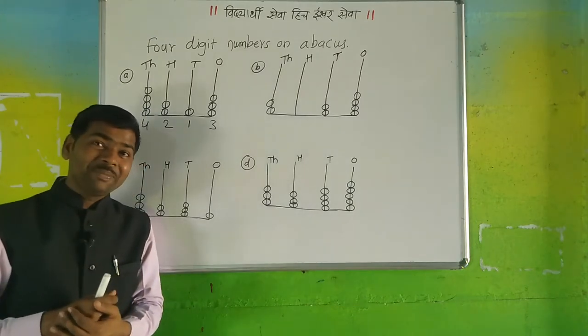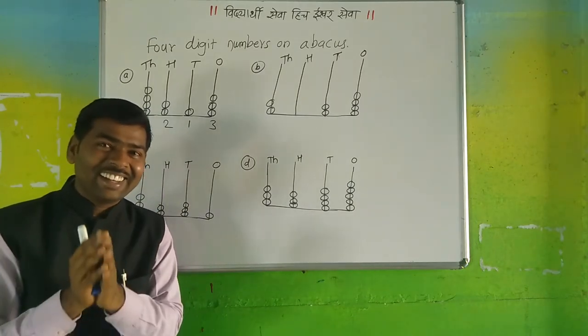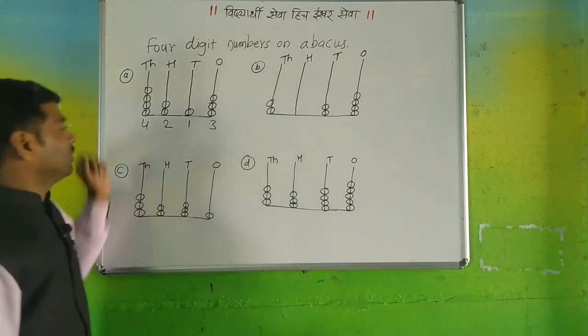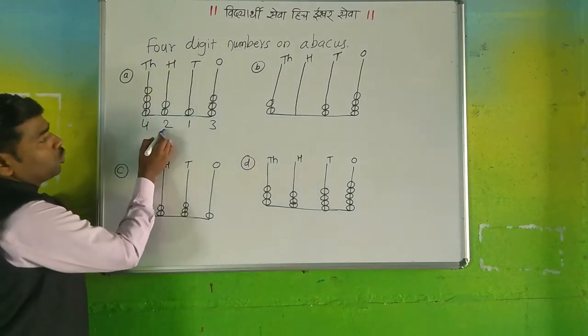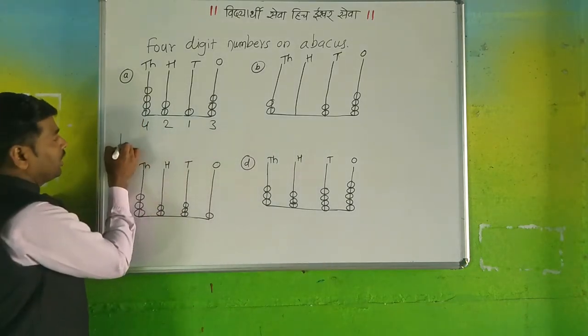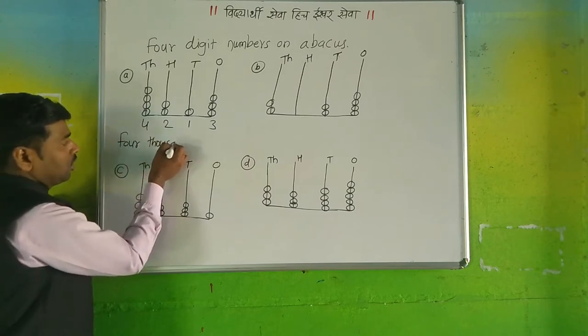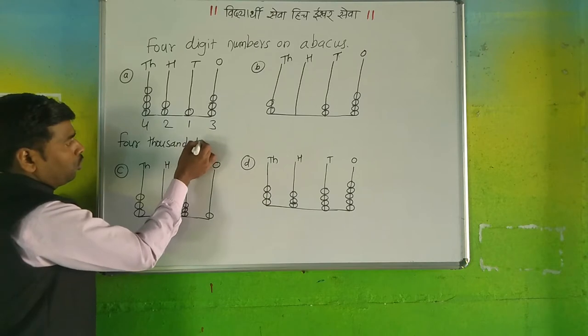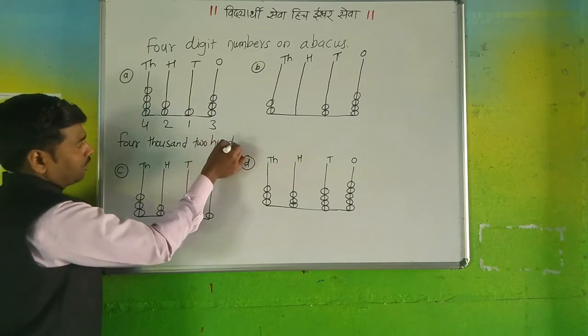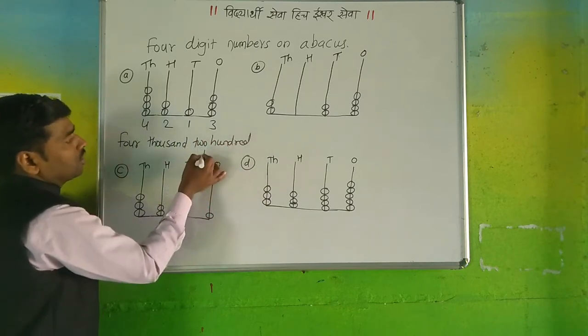Okay, then see here. The answer is four thousand two hundred and thirteen. How do you write this? Four thousand two hundred and thirteen.